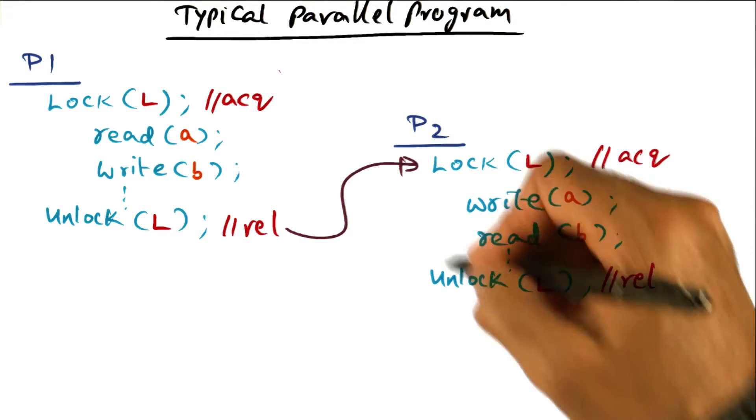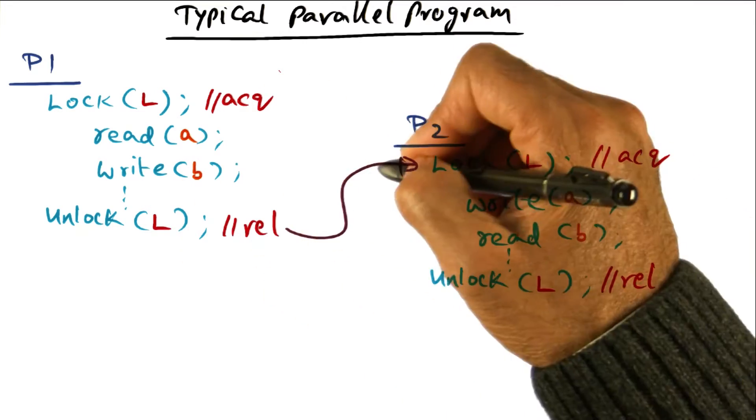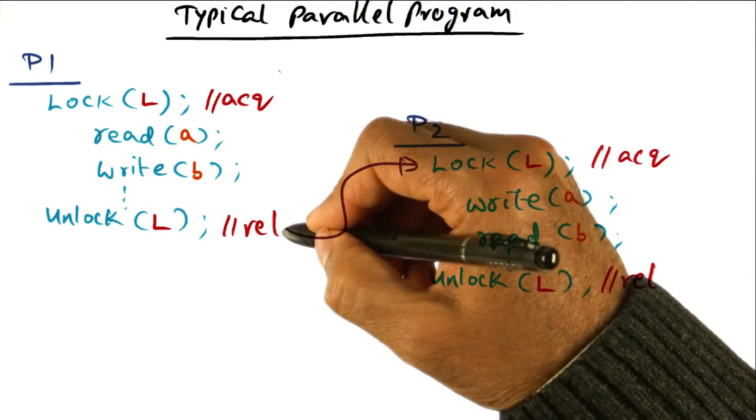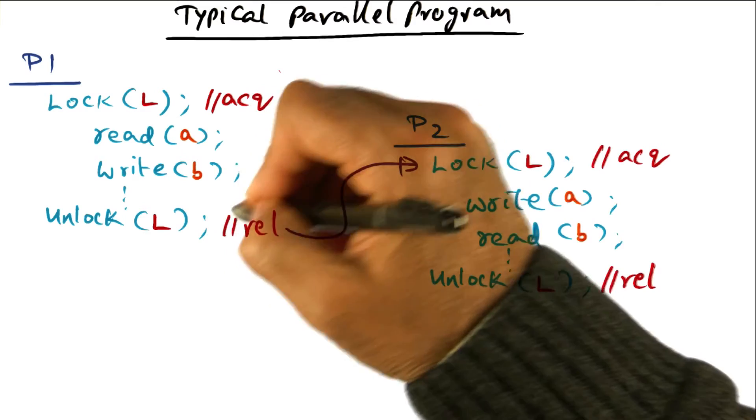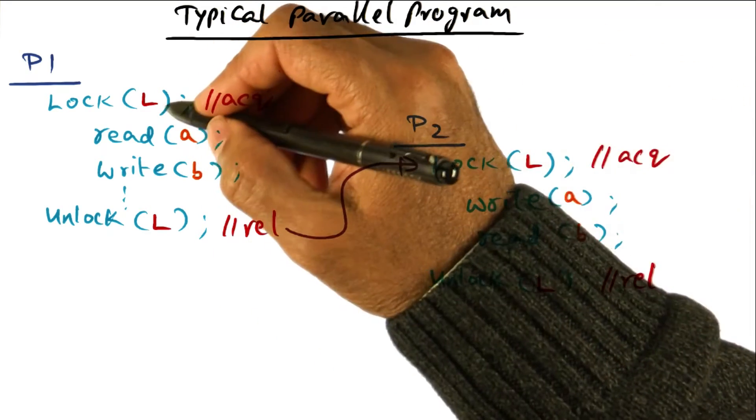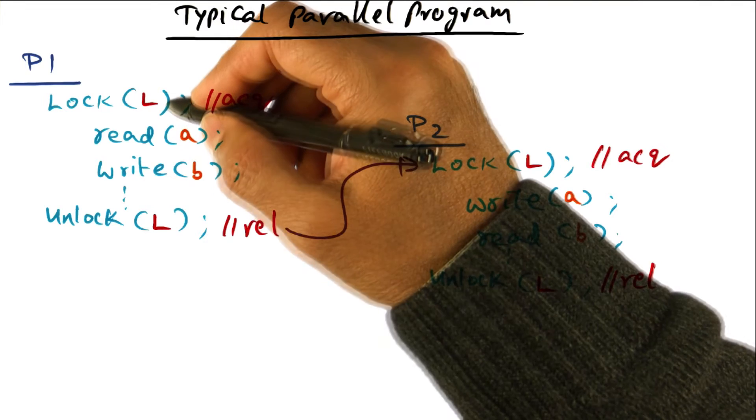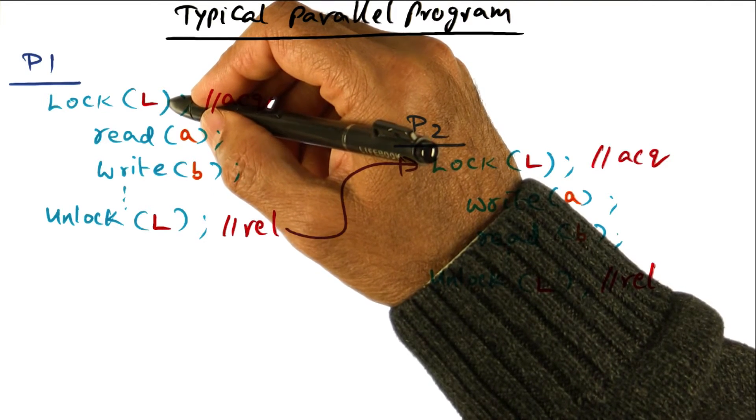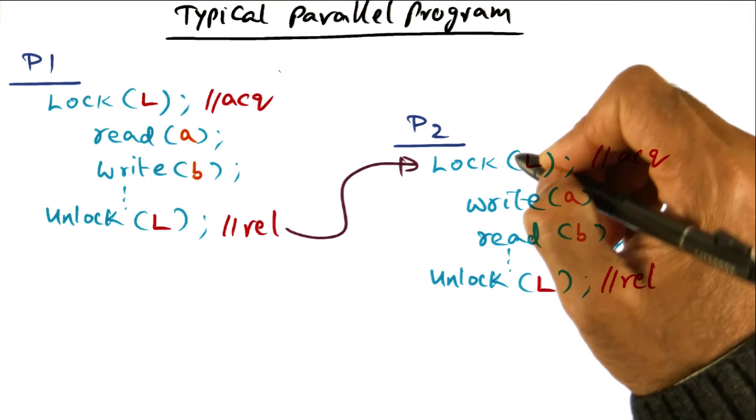So if another processor, let's say P2, gets the same lock, it's going to get the lock only after I release it. So only after I release the lock, this guy can get this lock, because the semantics of the lock, it is a mutually exclusive lock, and therefore only one person can have the lock at a time.